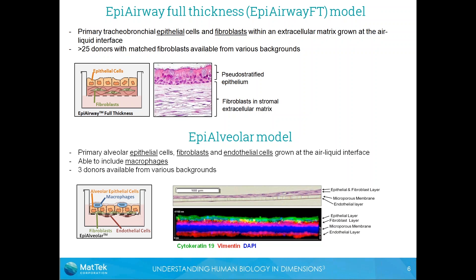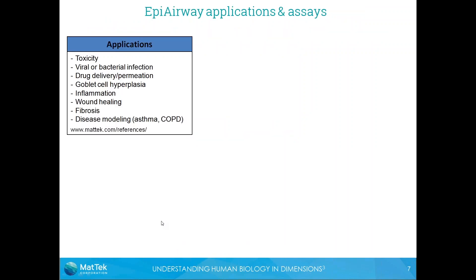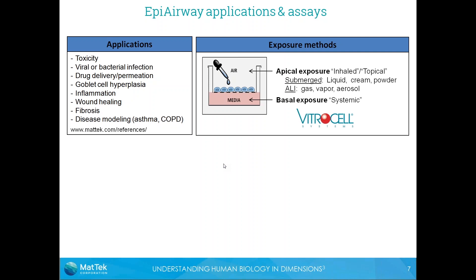Our airway models are used for a variety of different applications, including toxicity studies, viral and bacterial infection, drug delivery, inflammation, fibrosis, and more — a complete list with references is on our website. Because these tissues are grown at the air-liquid interface, they lend themselves to a variety of exposure methods: treatment can be added to the basal media to mimic systemic exposure, or the compound of interest can be exposed on the apical surface as a liquid, cream, or powder, or at the air-liquid interface as a gas, vapor, or aerosol. Vitrocell produces a variety of exposure systems for air-liquid interface exposures.